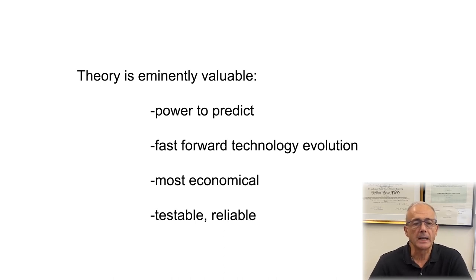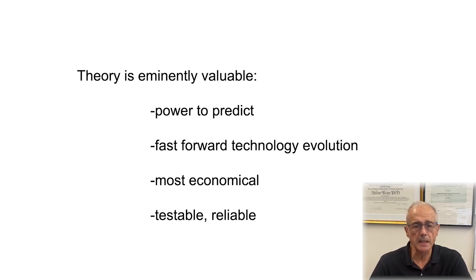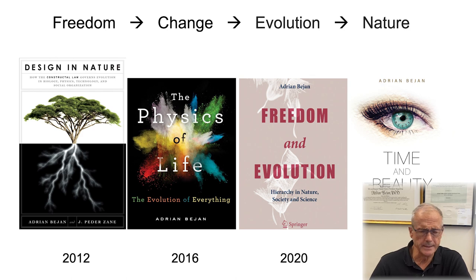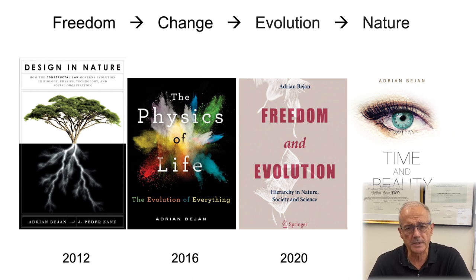If you would like to learn more, I wrote many books. My most recent books tend to be of the popular kind. For the general audience, from left to right over the past 10 years: 'Design and Nature,' 'The Physics of Life,' 'Freedom and Evolution,' and 'Time and Beauty.' The thread of that sequence of books, which represents my own evolution, is the same as the thread in my lecture today. With freedom, change is possible. With change after change, evolution is possible. And because of evolution, nature is possible.